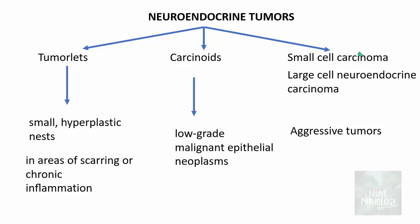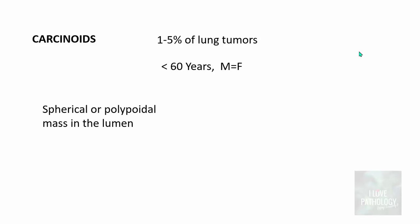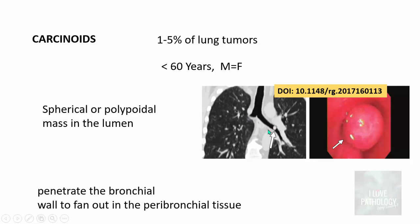Tumorlets are small hyperplastic nests found in areas of scarring or chronic inflammation. Carcinoids are low-grade malignant epithelial neoplasms constituting around 1 to 5 percent of lung tumors. They are usually found in individuals aged less than 60 years, with males more commonly affected. Grossly, they are spherical or polypoid masses occurring within the lumen with normal overlying mucosa. They can form an obstructive mass or penetrate the bronchial wall to fan out into peribronchial tissue — called a collar button lesion.